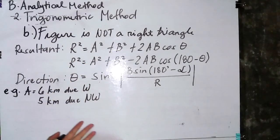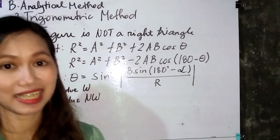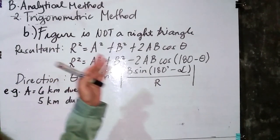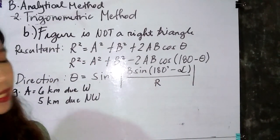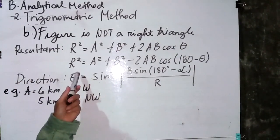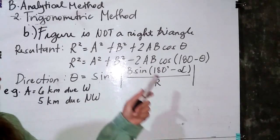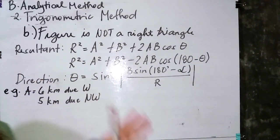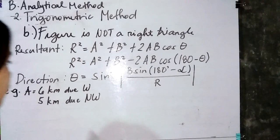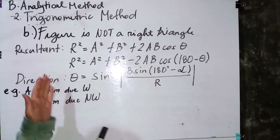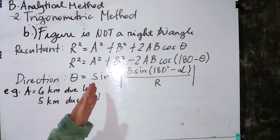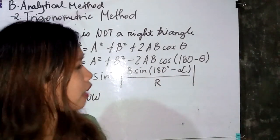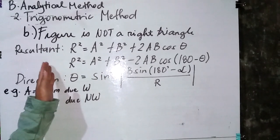The next method is when the figure is not a right triangle. We use the cosine law: r squared equals a squared plus b squared plus 2ab cosine theta. For the direction of the resultant, we use the sine law: theta equals sine raised to negative 1 of b times sine of (180 degrees minus alpha) divided by the resultant.